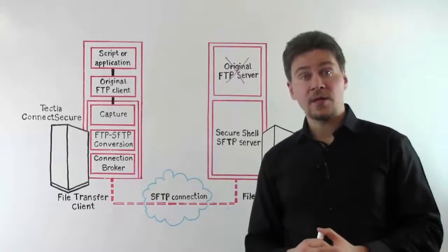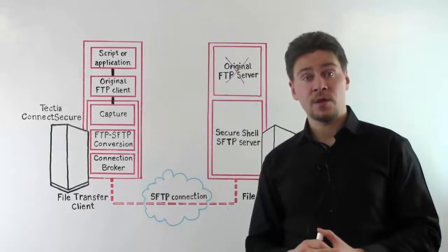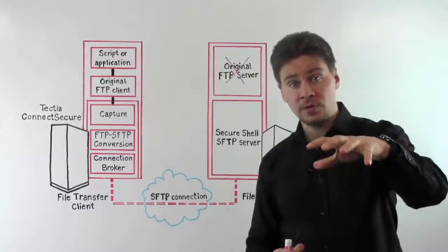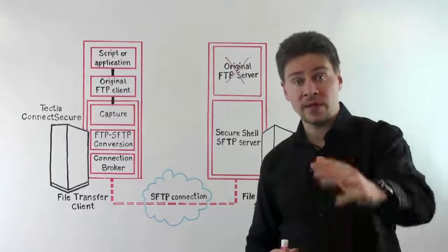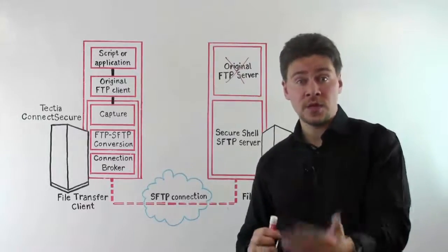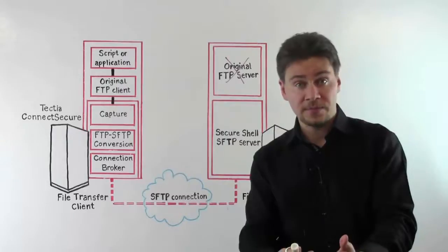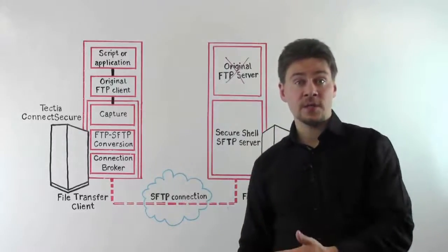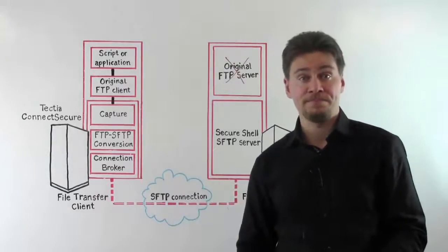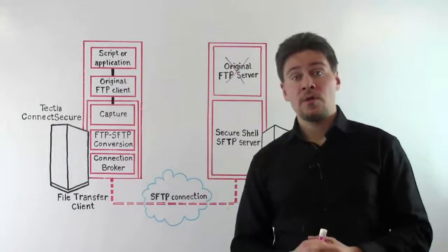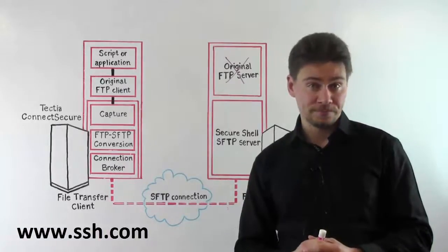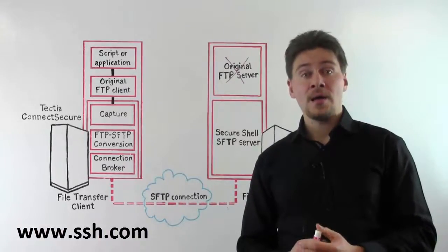So those were the three different customer cases. The first was how to secure FTP traffic and convert FTP to SFTP. The second challenge was how to secure arbitrary TCP-based application traffic. And finally, the third challenge was how to build SFTP support into a business application. If you want to know more, please visit our website at www.ssh.com. I hope you have a nice day.